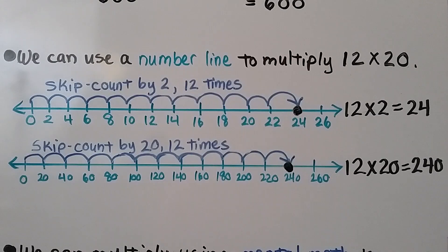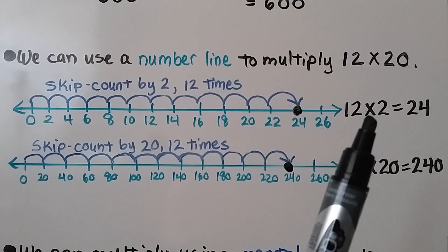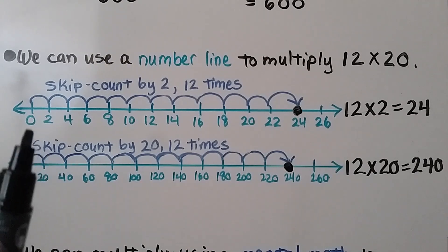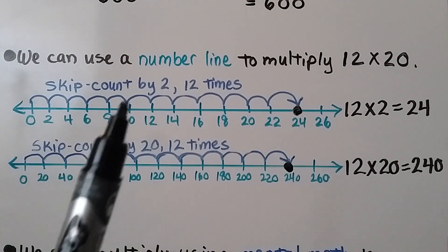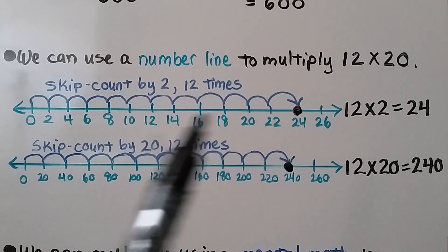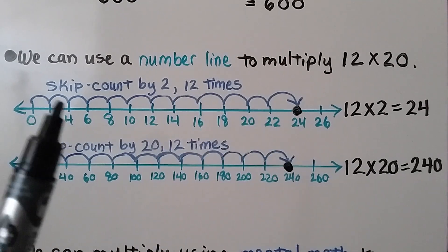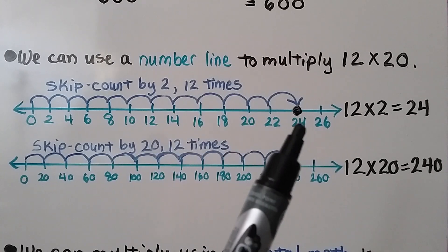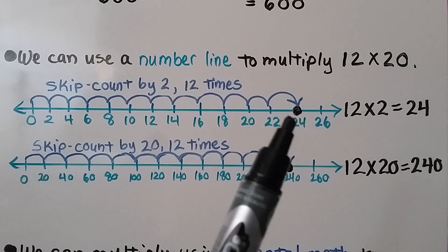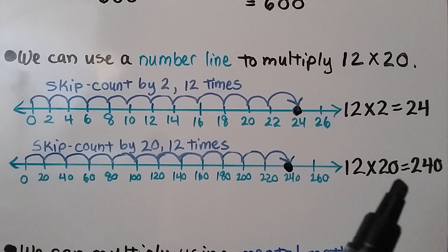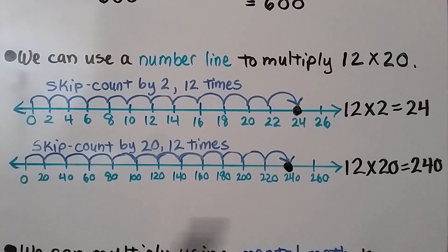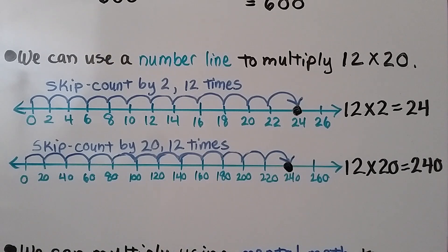We can use a number line to multiply 12 times 20. We can think of it as 12 times 2 — skip counting by 2s twelve times gives us 24, with 12 hops. So for 12 times 20, we would skip count by 20 twelve times, and we would have 240.